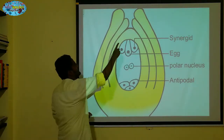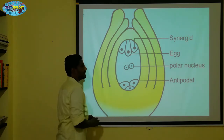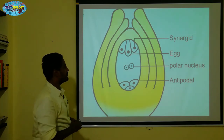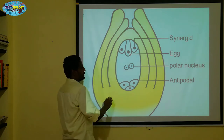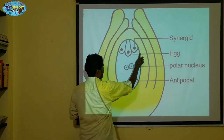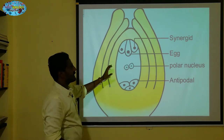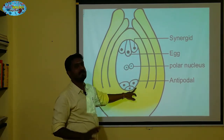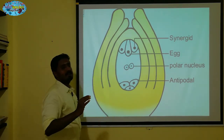This is a micropyle. This is a chalaza. There are 8 cells inside the ovule. There is one cell, and you can know that there is a chalaza. This structure is called Endosperm.